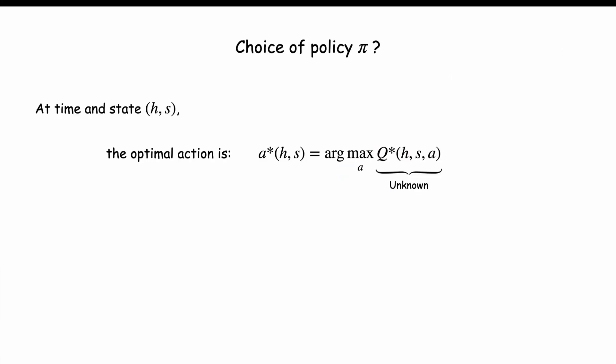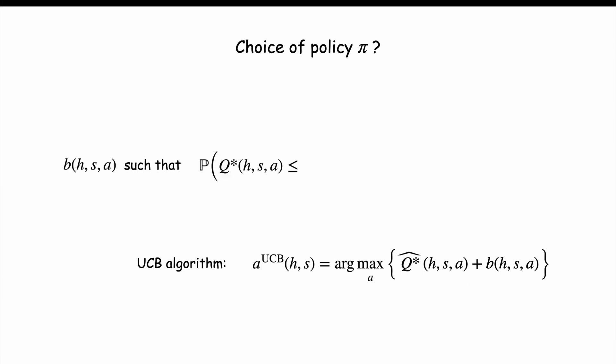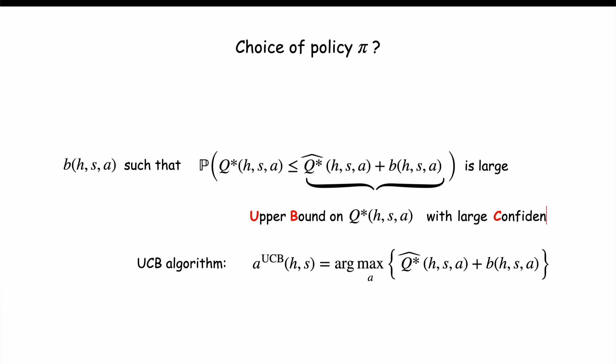To do that, at every time and state Hs, the algorithm UCB, or upper confidence bound, chooses the action A which has the largest estimate of Q star plus an optimistic bonus B of HsA, in order to promote variety in the choice of the actions, that is the exploration. Usually the bonus is chosen such that the UCB estimate is larger than Q star with large probability. In other words, it is an upper bound on Q stars with large confidence, hence the name upper confidence bound.